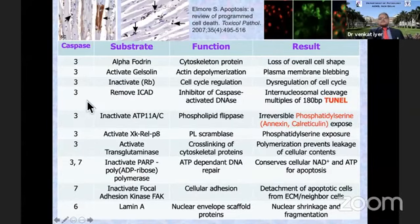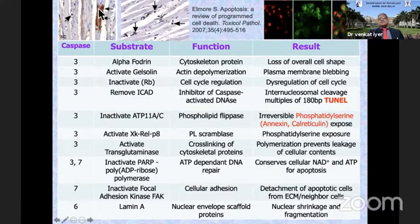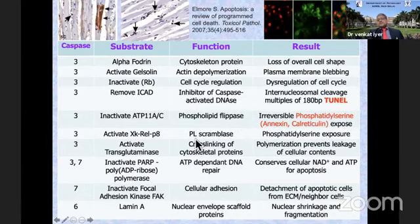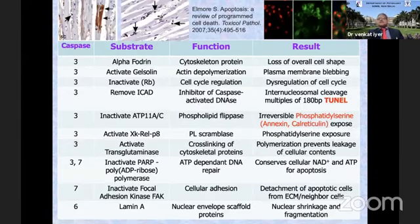The earliest way of detecting apoptosis used to be the TUNEL, or TdT nick-end labeling. TdT labels all nicks present in the DNA. Now we can do other kinds of stains, like staining for caspase-3. Even a cell which has not started to undergo apoptosis can be found — there's a cardiac myocyte full of caspase-3. Caspase-3 can also activate phospholipid flippases and phospholipid scramblases which invert the cell membrane, and phosphatidylserine, annexin, and calreticulin molecules normally present on the cytosolic side or in the rough endoplasmic reticulum come outside and we can detect them by confocal microscopy or flow cytometry.